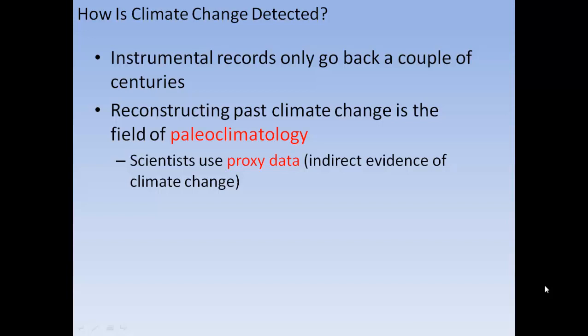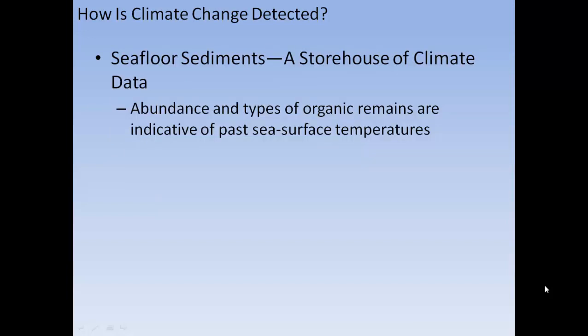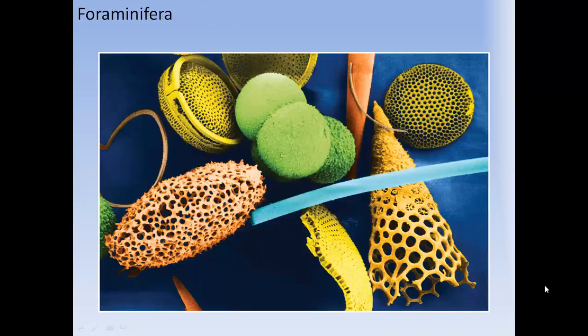How does climate change get detected? Instrumental recordings only go back a couple of centuries. Reconstructing past climate change is a field of paleoclimatology. Scientists use proxy data or indirect evidence of climate. Ocean sediments are a storehouse of climate data; the abundance and types of organic remnants are indicative of past sea surface temperatures.